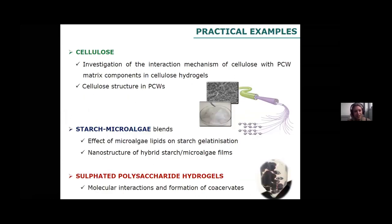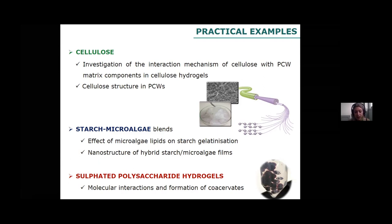With all of this in mind, let's go into some examples so you can see how all of this is applied in reality when working with different types of carbohydrates. I prepared three different examples — cellulose, starch and microalgae blends, and sulfated polysaccharide hydrogels such as agar — but I think maybe we will have time for one or probably two. The important thing is that you really understand what we are doing and why, and that you ask many questions at the end.